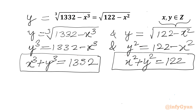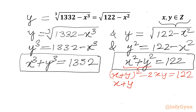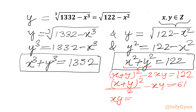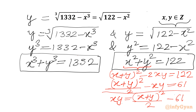After rearranging terms we get x cubed plus y cubed equal to 1332, and x squared plus y squared equal to 122. Now I will use algebraic identities. I can write x squared plus y squared as (x plus y) whole squared minus 2xy equal to 122. Dividing by 2 gives xy equal to (x plus y) squared over 2 minus 61. I will call this equation number 1.